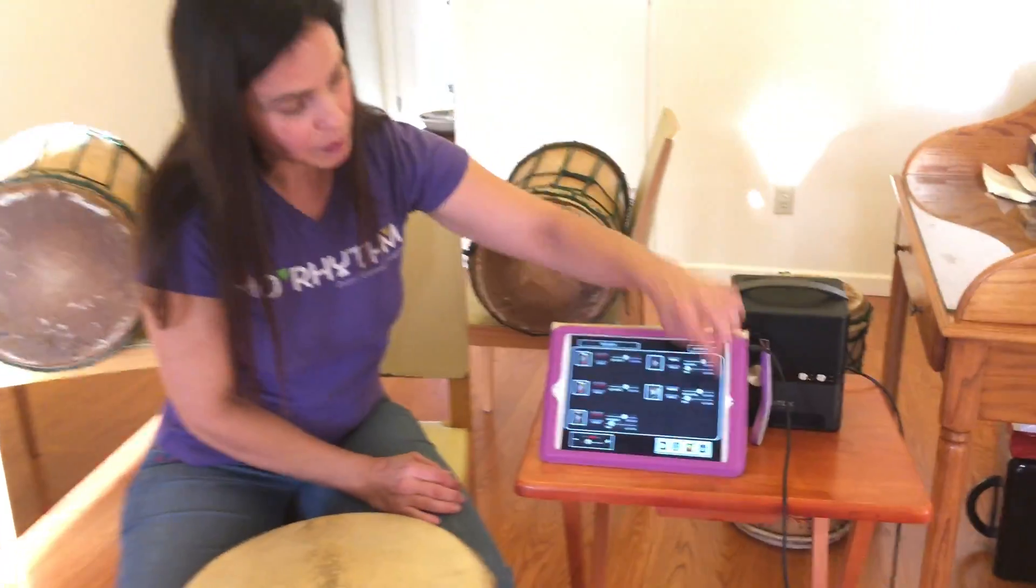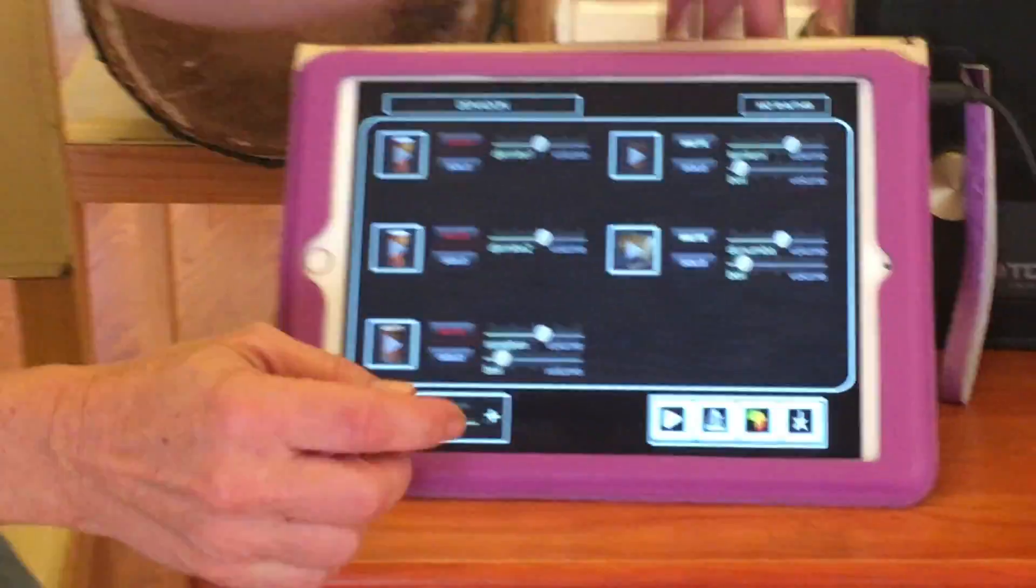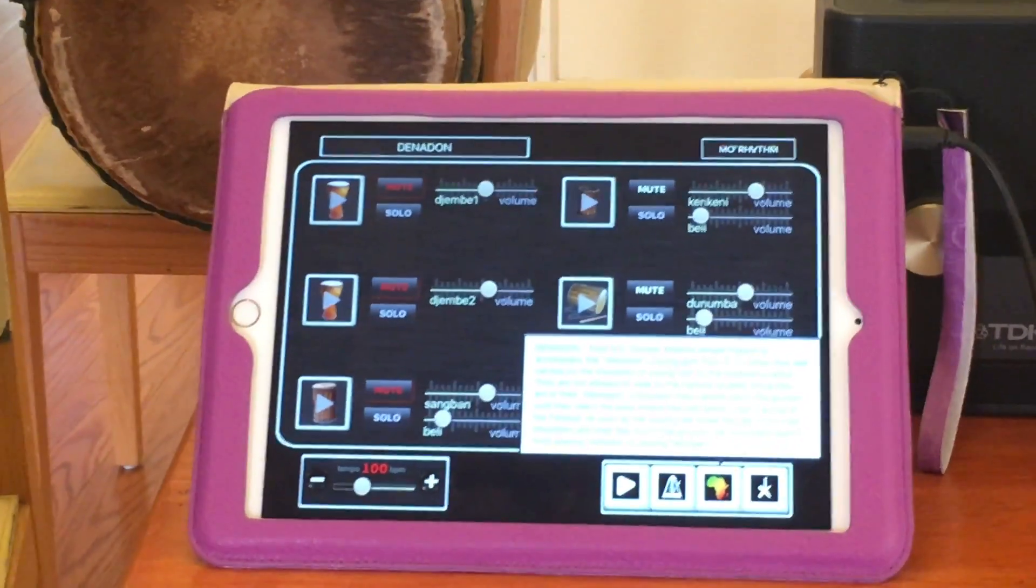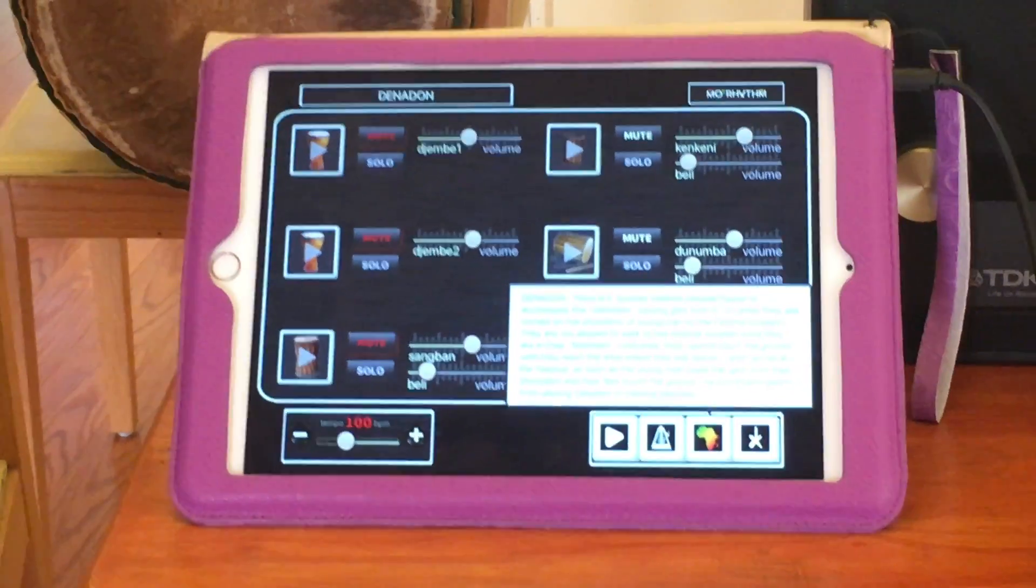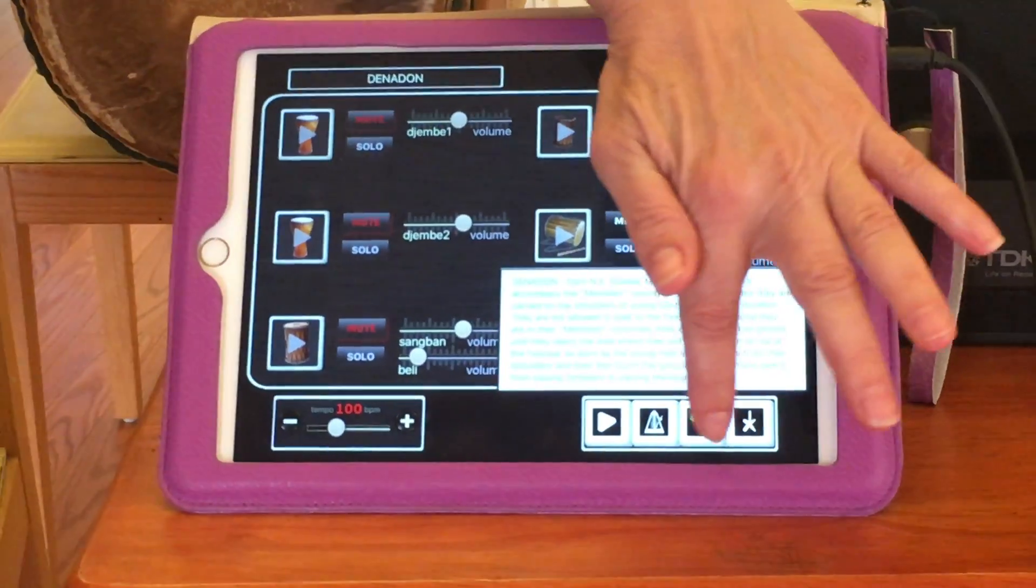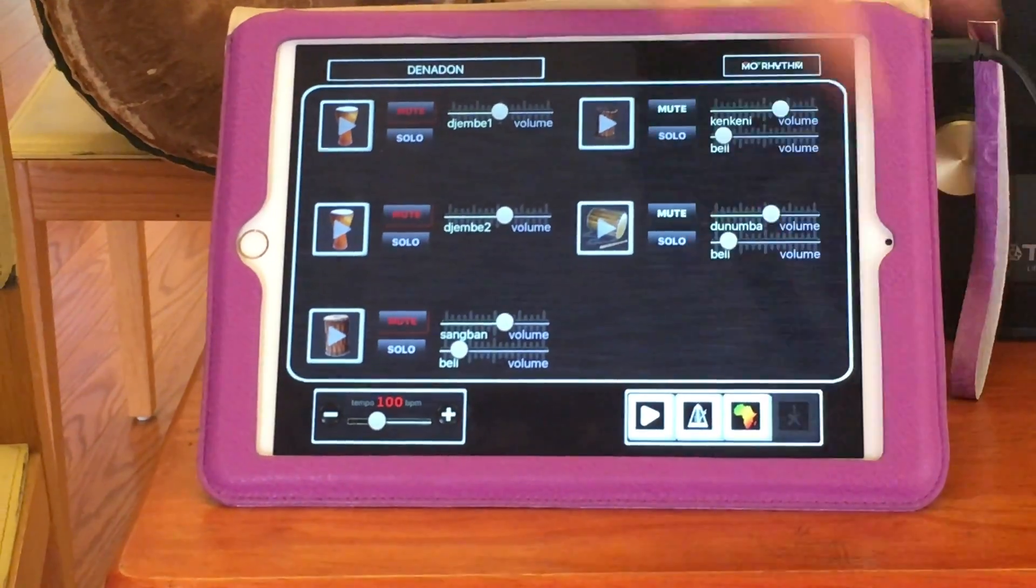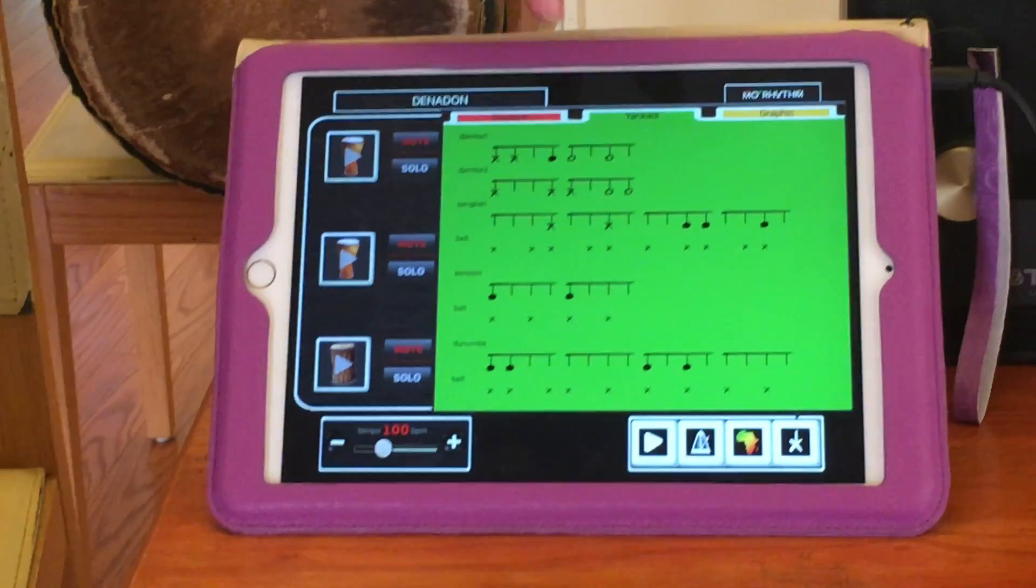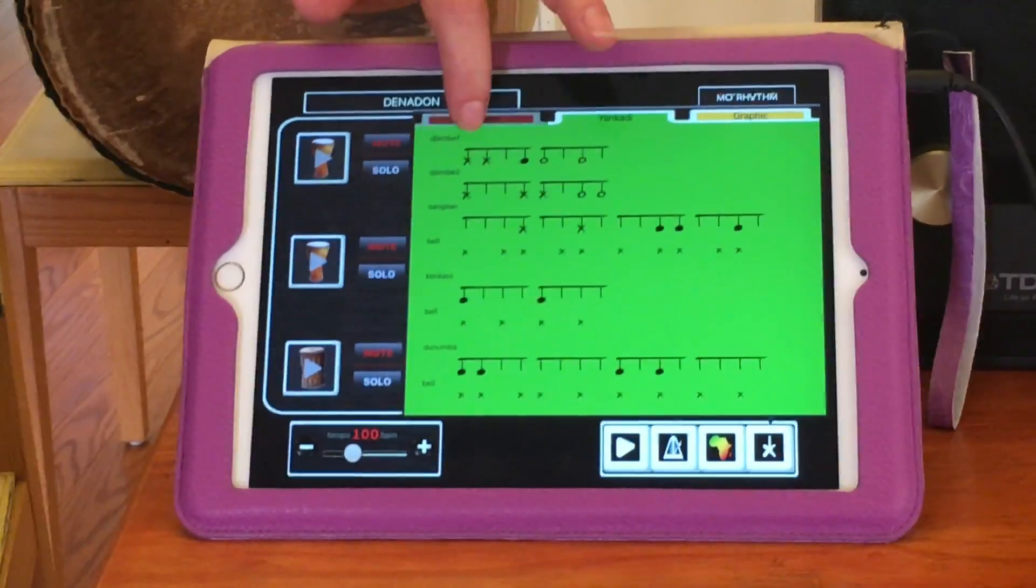The other button down here is the picture of Africa. When you press this, you're going to get the history of the rhythm, the description of where it comes from, why it's played, what country. And when you click on the star, you're going to see the notation. The one that comes up is default for the simplified notation that we use. There is Western notation as well.